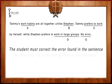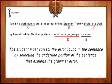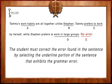For questions in this section of the test, a student must correct the error found in the sentence by selecting the underlined portion that exhibits a grammar error. The first step is to read the sentence and see if it is correct as written. If that is the case, we would choose answer E, which stands for no error.